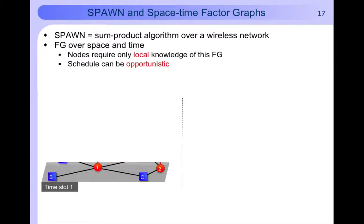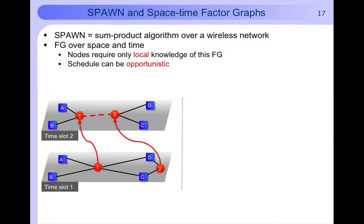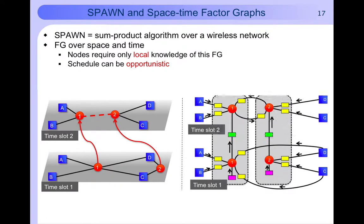To appreciate the distributed nature of SPAWN we can see that the factor graph is spanning both space and time. So this is a network topology as it varies over time with nodes entering and leaving the network. And this is the corresponding factor graph. So the factor graph can be very large spanning space and time. However every node in the network only needs to know its local part of the factor graph. As nodes enter and leave the network every node's local factor graph can grow or shrink correspondingly giving rise to a large organic factor graph.